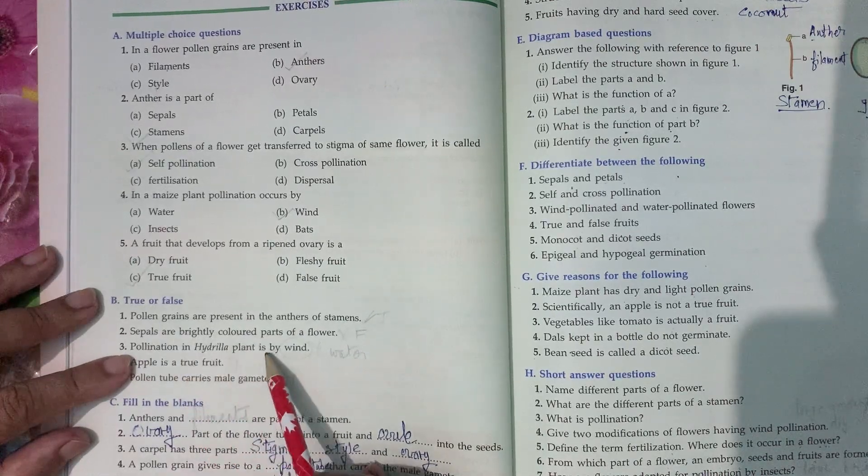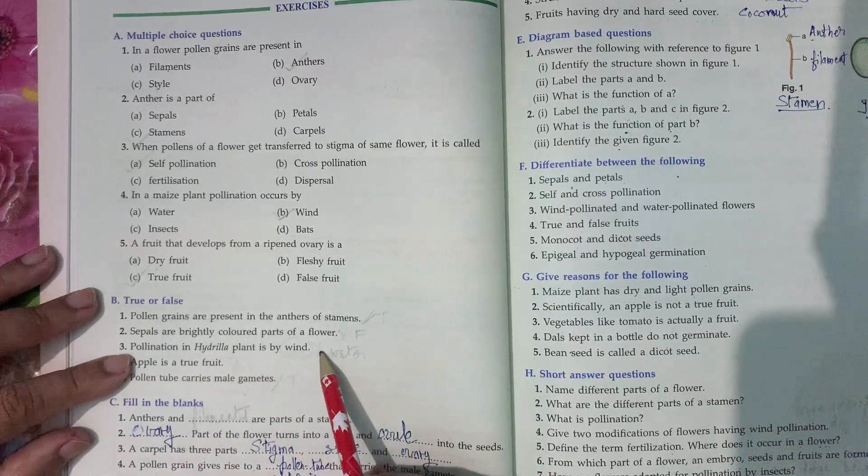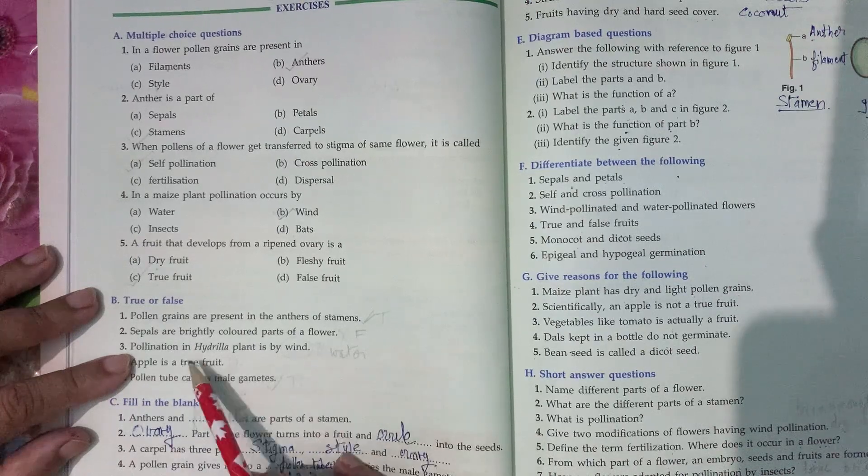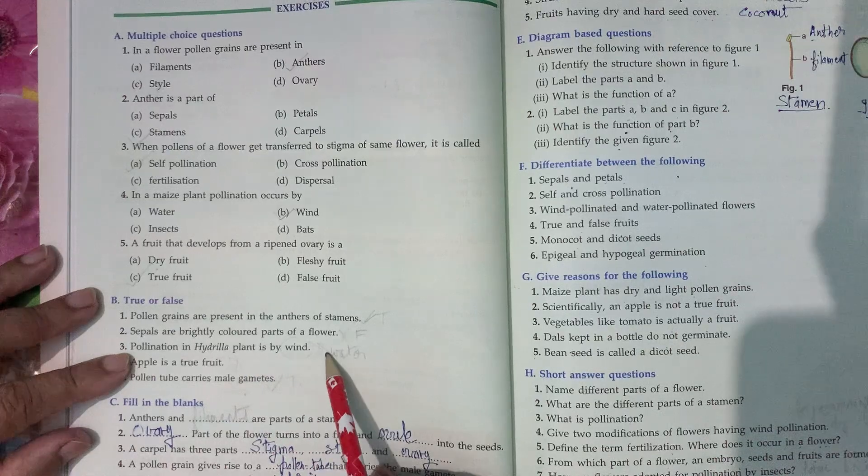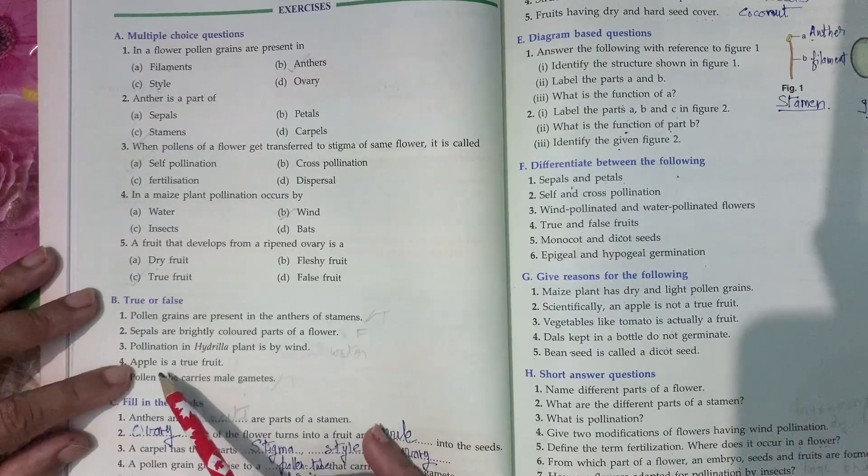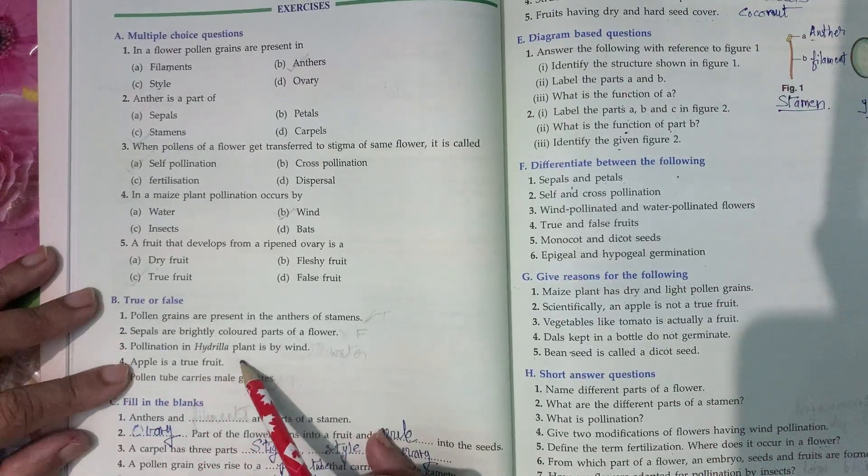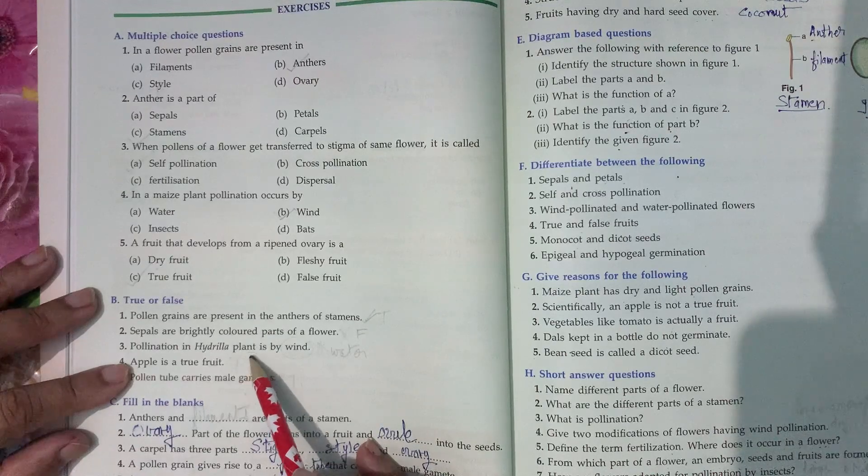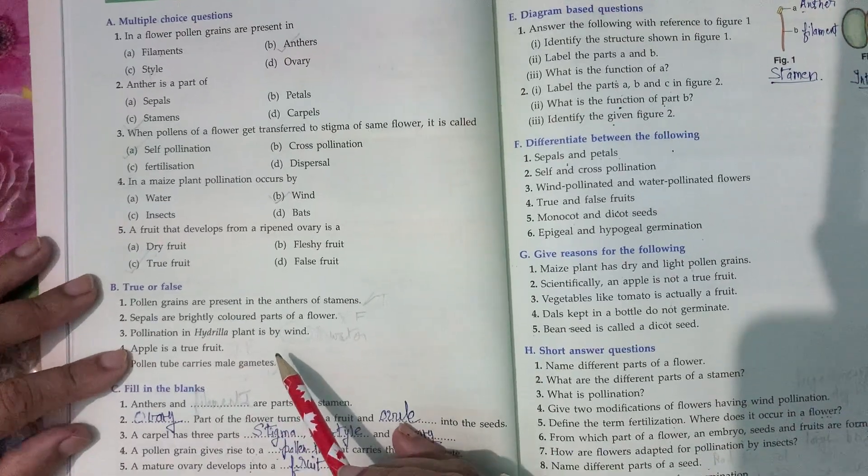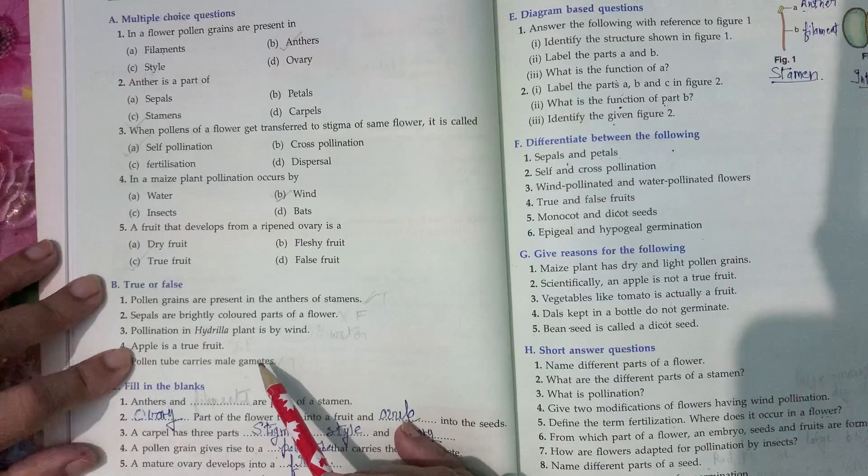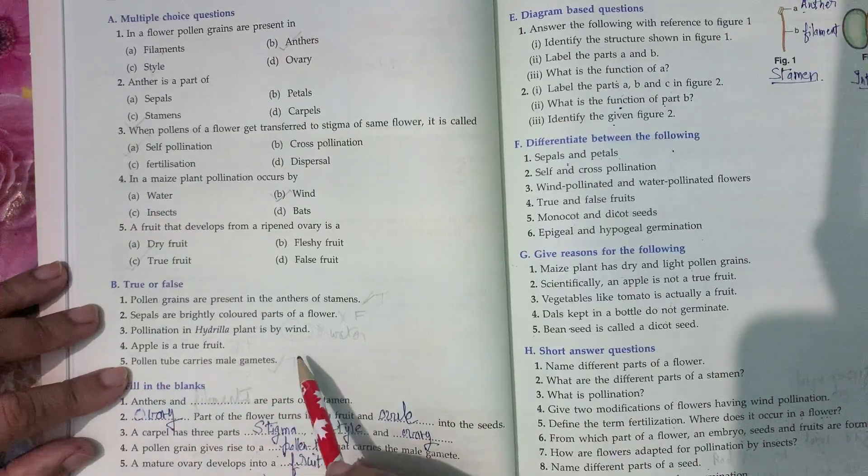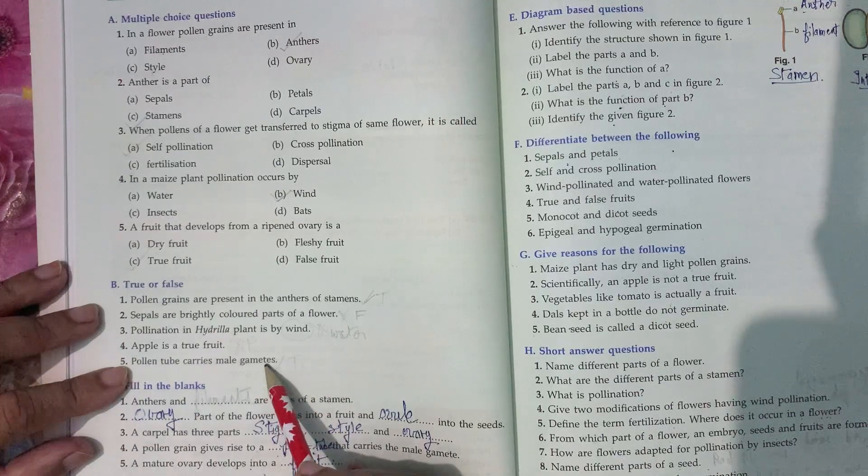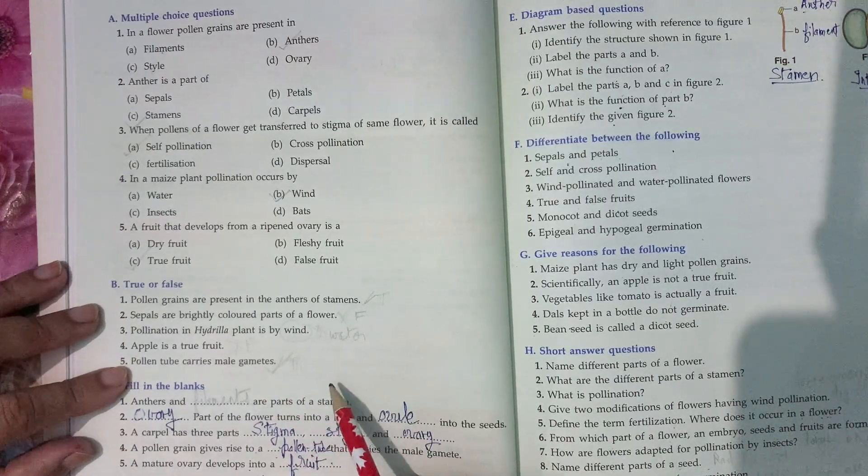Pollination in Hydrilla plants is by wind. False. Hydrilla is an aquatic plant, so here pollination takes place by water. Apple is a true fruit. It is false because apple develops from the thalamus of the flower. Pollen tube carries male gamete. Yes, the statement is true.